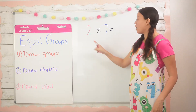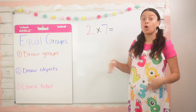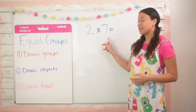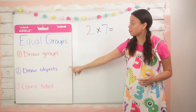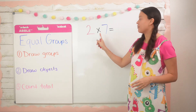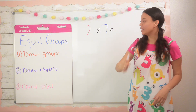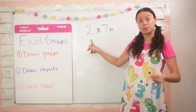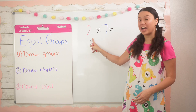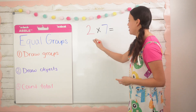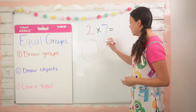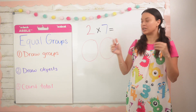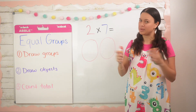Okay besties, so we have our problem two times seven, or two groups of seven. We're going to follow these three steps to figure out how to use equal groups to solve this problem. Step number one says to draw the groups. The first factor tells us how many groups to draw. In this case we're going to draw two groups — one, two. I like to draw them really big so that when I draw the objects inside it's easier to count.